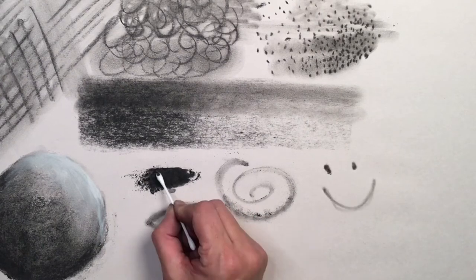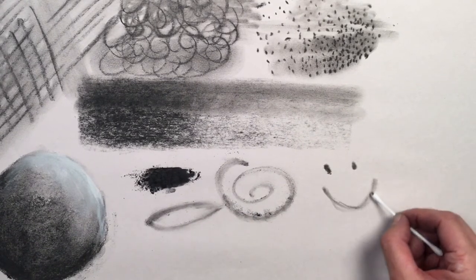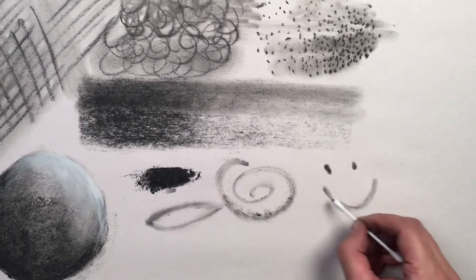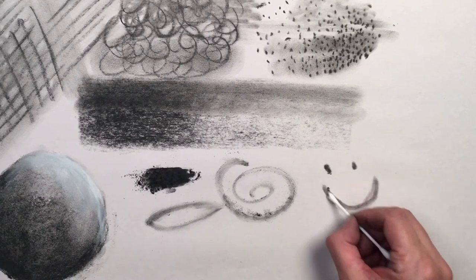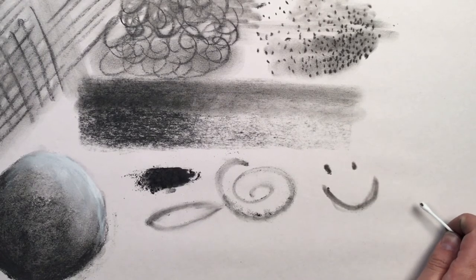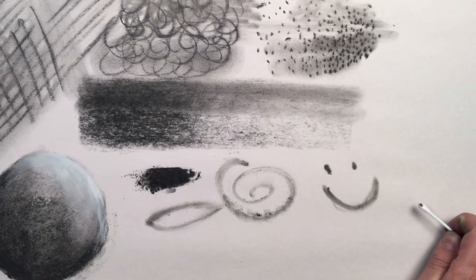And while I have all of this powder here I might as well use some more of it up and I'm going to use a cotton swab this time. It seems as though this gives me a slightly more defined line than what I get from the paintbrush.